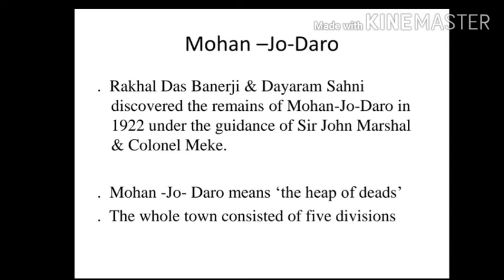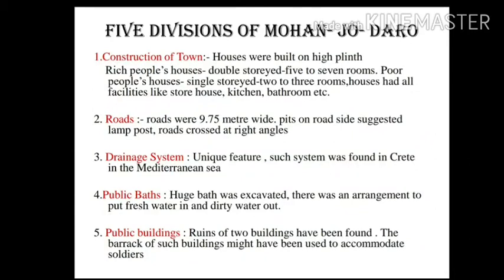The whole town of Mohenjo-daro had five divisions. The first is construction of the town: houses were built on a high plinth to protect them from floods and dampness. Rich people had double-storied houses with five to seven rooms, while poor people lived in single-storied houses with two to three rooms. The whole town was fortified with a strong wall around it. Main entrances of houses opened onto side lanes, not main roads. Houses had facilities like storehouses, kitchens, and bathrooms, with proper arrangements for doors and windows to keep them airy and ventilated.